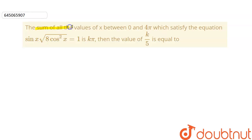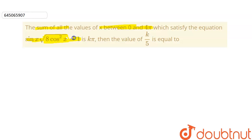The question is: the sum of all the values of x between 0 and 4π which satisfy the equation sin x into √(8cos²x) = 1 is kπ. Then the value of k divided by 5 is equal to?